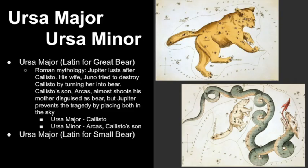Let's take a quick look at one of the legends surrounding these two constellations. Ursa Major is Latin for Great Bear and Ursa Minor is Latin for Small Bear. There are many myths and stories surrounding these constellations because they're so visible in the sky throughout many cultures. One that stood out is from Roman mythology: Jupiter was the king of the gods and he lusted after many women, one of whom was Callisto — not his wife. His wife Juno tried to destroy Callisto by turning her into a bear.